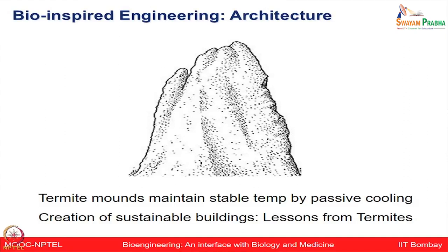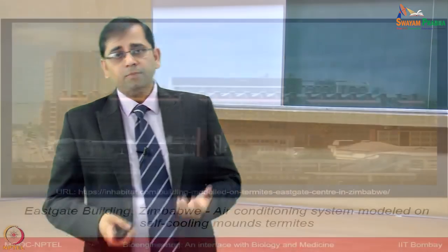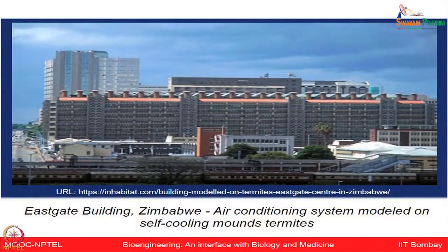Let us look at another example from architecture. Termite mounds maintain very stable temperatures inside through passive cooling. One could take lessons from termites for the creation of sustainable buildings. Look at this elegant building in Zimbabwe — the Eastgate Building — whose air conditioning system is modeled on the self-cooling mounds of termites. It resulted in a mechanical passive cooling system that uses only 10% of the energy for ventilation compared to conventional buildings, providing cooling while using very little power.